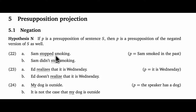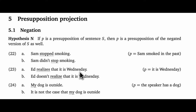Let's consider a simple example. We start with sentence S: 'Sam stopped smoking,' and our target meaning is the proposition that Sam smoked in the past. If this target meaning is a presupposition, it will project through the negation in the negated version of S, which is 'Sam didn't stop smoking' — and indeed it does. Our target meaning survived the negation untouched; the proposition that Sam smoked in the past remains a commitment of the negated version of S. The pattern is the same for other examples: beginning with 'Ed realizes that it's Wednesday' and targeting the meaning that it's Wednesday, we create 'Ed doesn't realize that it's Wednesday' and find that the sentence continues to commit the speaker to that target meaning.